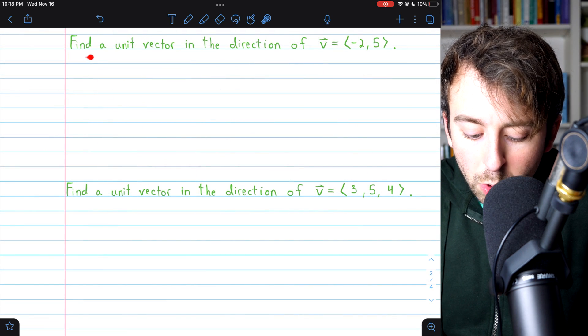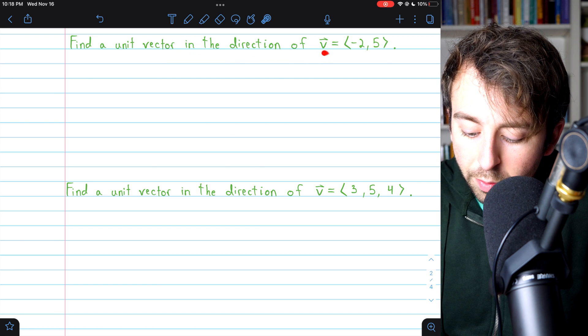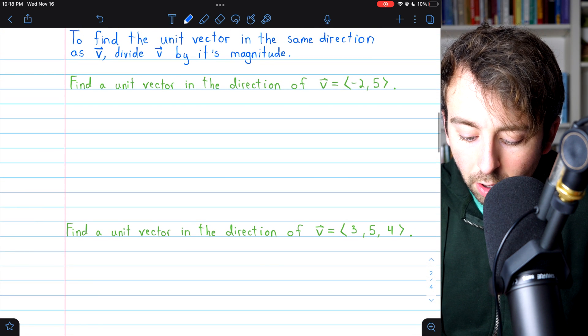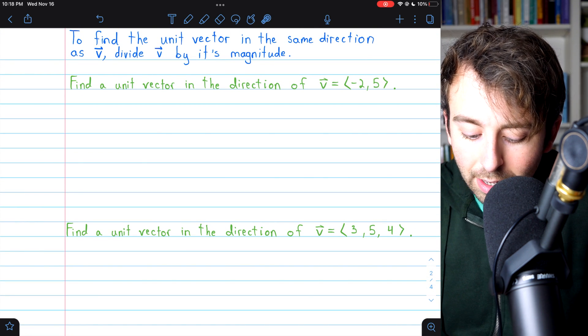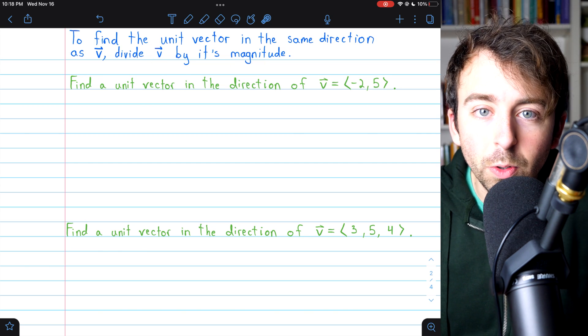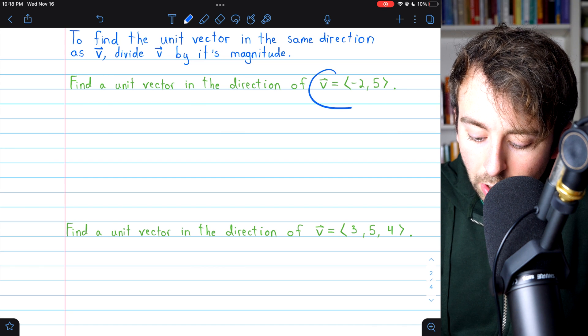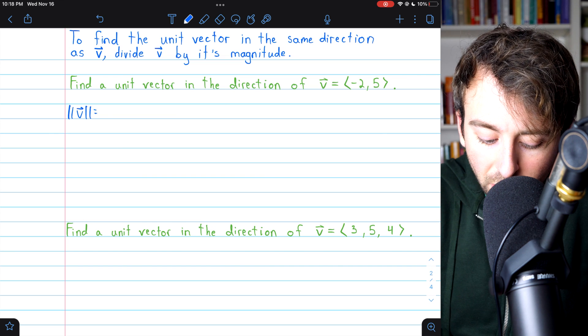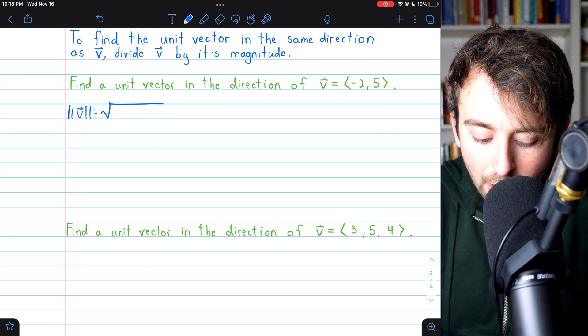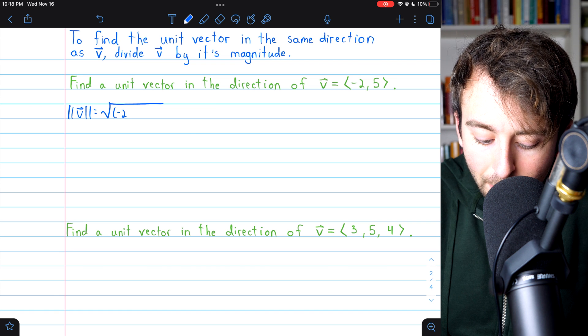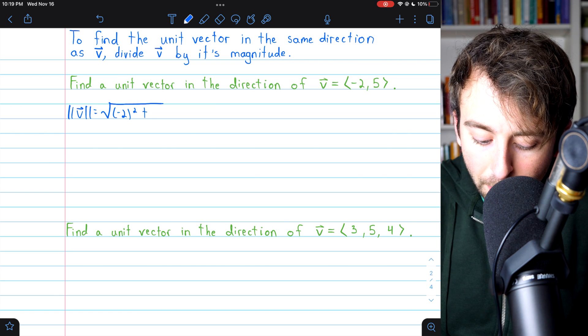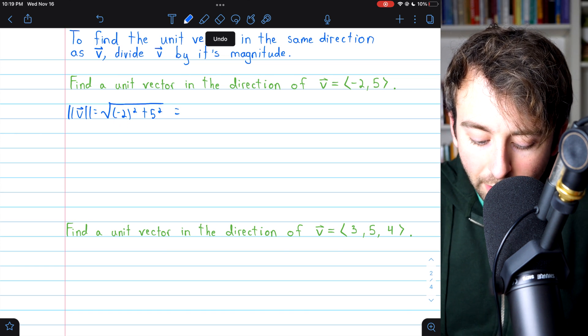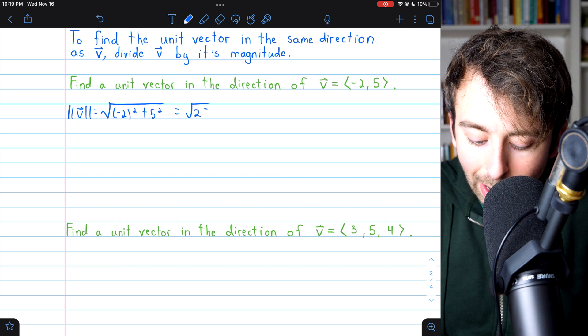Here's the first problem. We want to find a unit vector in the direction of v, which is a vector with components negative 2, 5. And remember, to do this, all we need to do is divide the vector v by its own magnitude. So, let's begin by finding the magnitude of this vector v. The magnitude of the vector v is the square root of the sum of the squares of its components. That's just this. So, this is the square root of 4 plus 25. So, this is just square root of 29.